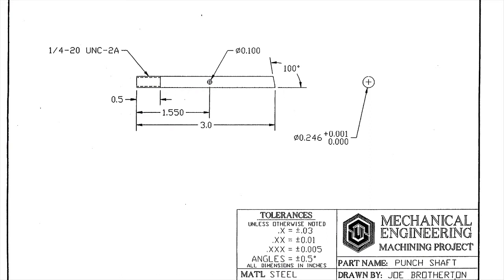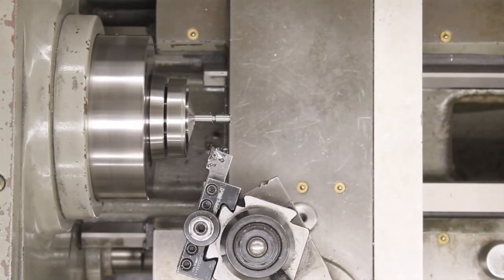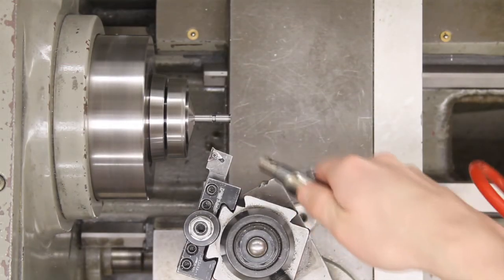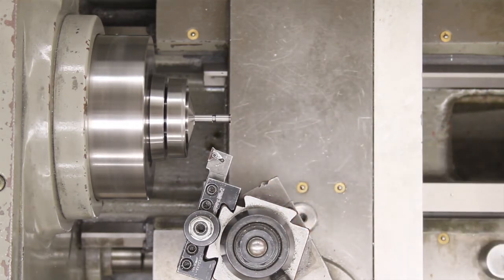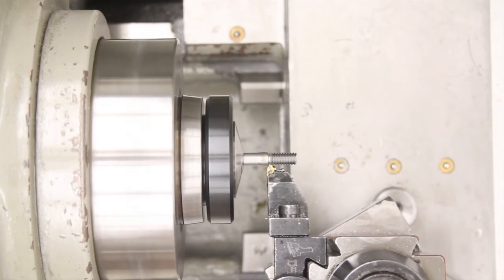Finally, we will thread the end of the shaft with a 1.25 thread, approximately 0.5 inches long. Cut a relief at 0.5 inches, with the same diameter as the minor diameter of the thread, 0.188 inches. Thread the end of the shaft with a 1.25 thread.